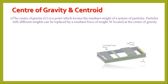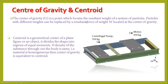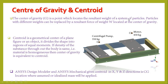This slide represents center of gravity and centroid. The center of gravity is a point which locates the resultant weight of a system of particles. Particles with different weights can be replaced by a resultant force of weight W located at the CG. Here you can see a schematic of a base frame where a point mass of 350 kg of a centrifugal pump is applied. CG is the point where the whole mass of the system is acting.